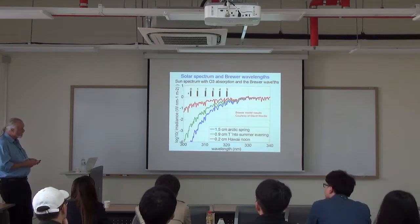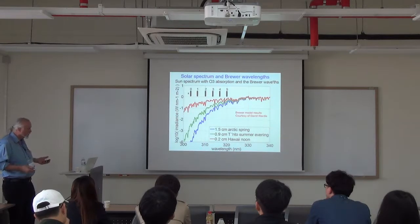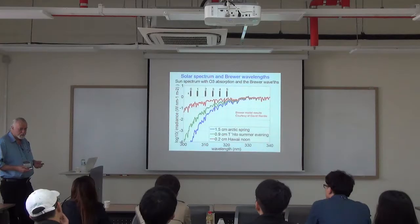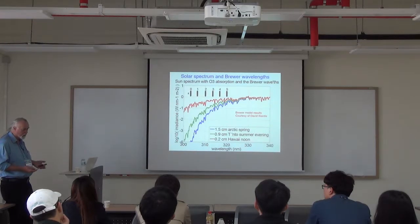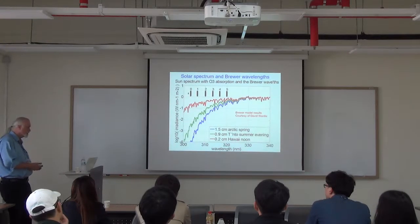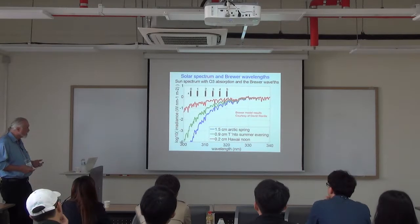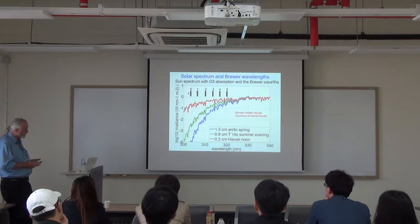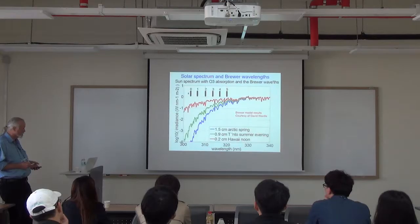The stray light issue really comes in because of ozone itself. Rayleigh scattering goes as one over lambda to the fourth, so it increases fairly rapidly towards shorter wavelengths—but nothing like as fast as the ozone absorption changes.